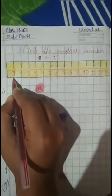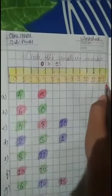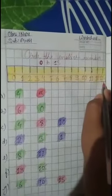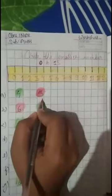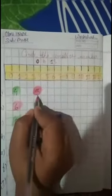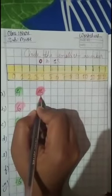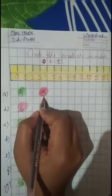So 0 is the smallest number and 13 is the biggest number. In this line, 0 is the smallest number and 13 is the biggest. So we will solve this line — 4 and 3 are given. So what do we have to do with the smallest number? We have to circle it.